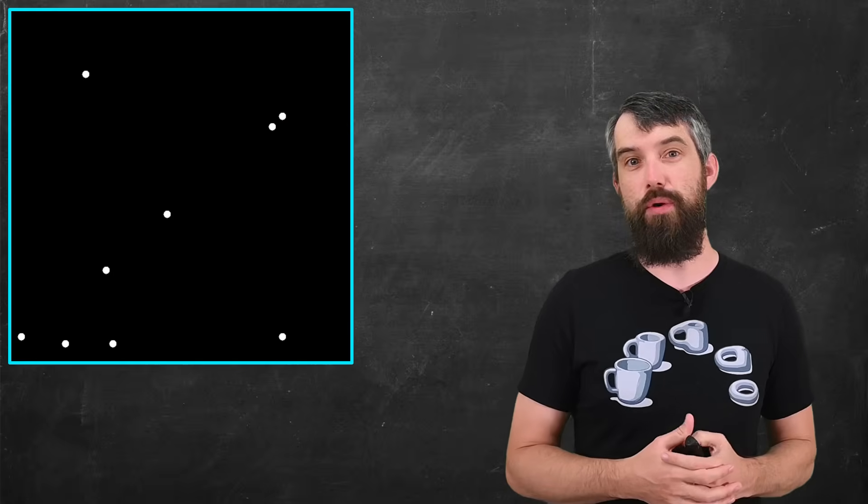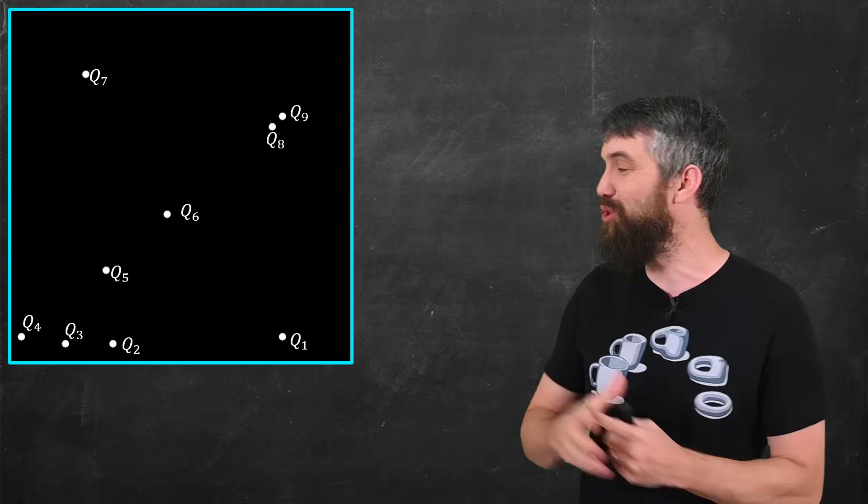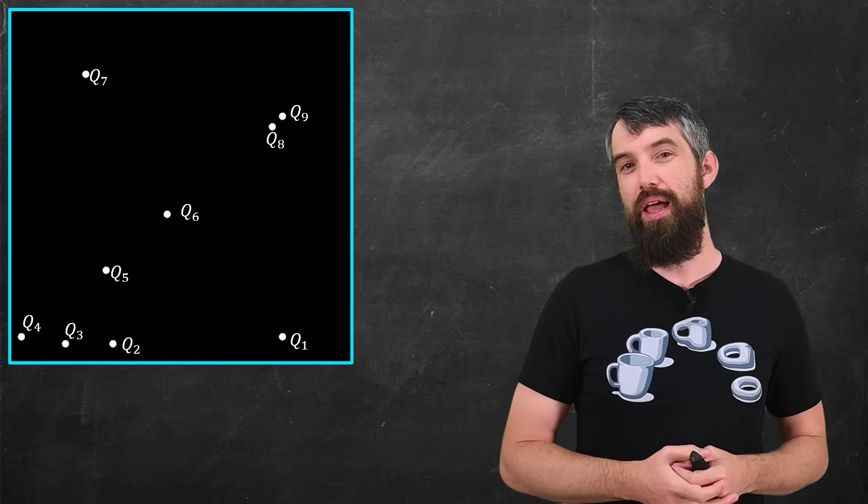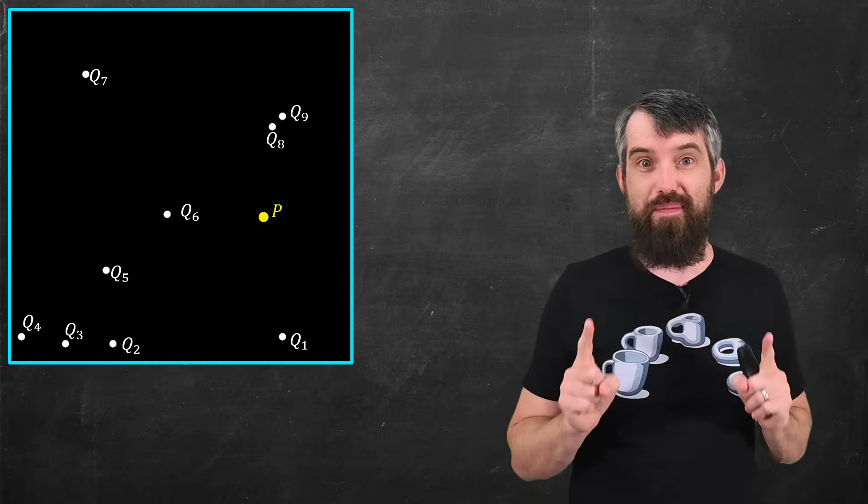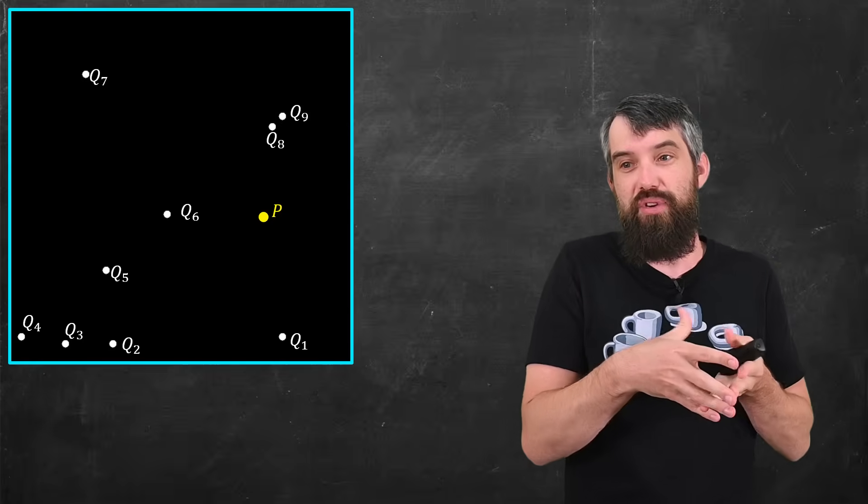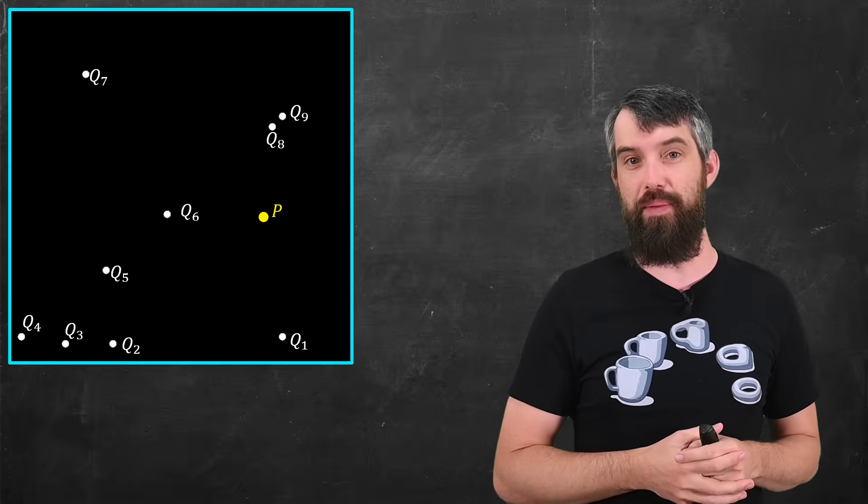Okay, so what should I do? Well, let me first just give some names to all of these points. I'll call them Q1, Q2, Q3. And what I want to imagine is, let's take some new points. So this is not one of my seeds, one of the starts of my crystallization. It's just some new point P.